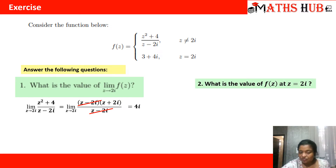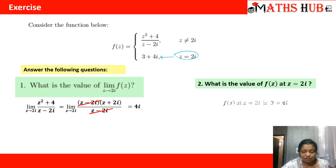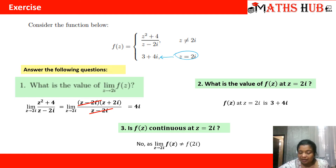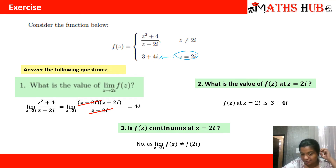The next question is: what is the value of the function f of z at z equal to 2 iota? It is already given — f of 2 iota equals 3 plus 4 iota. So is the function continuous? The function's value at z equal to 2 iota and the limit value are not the same. Since 3 plus 4 iota is not equal to 4 iota, the function is not continuous.